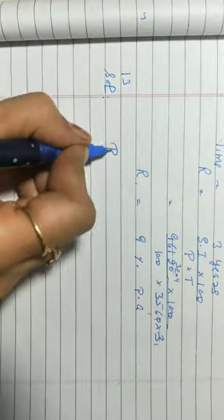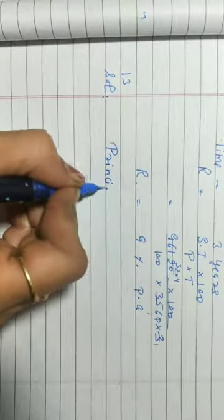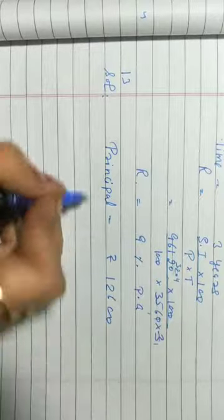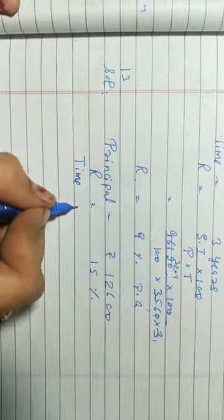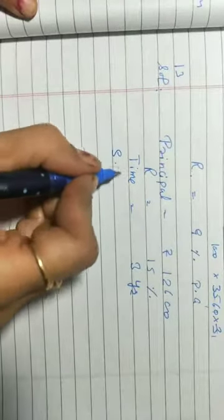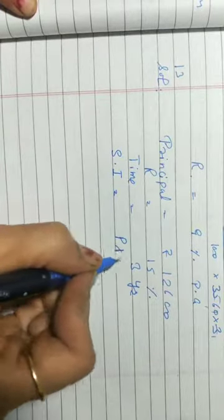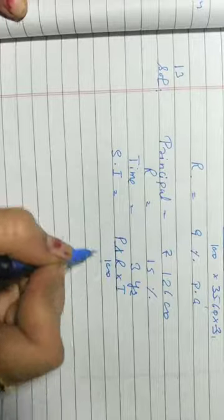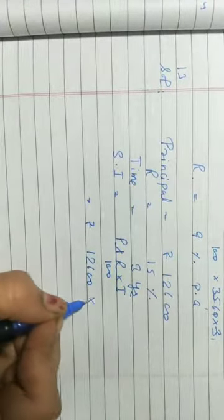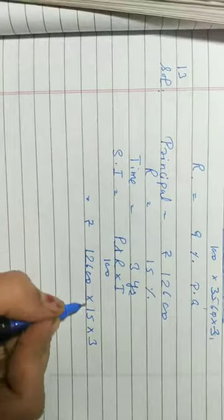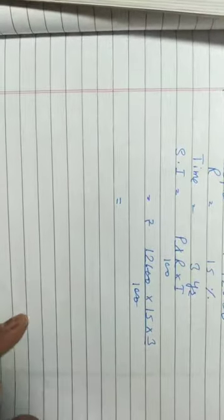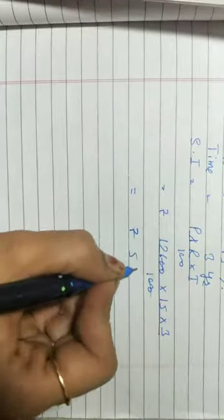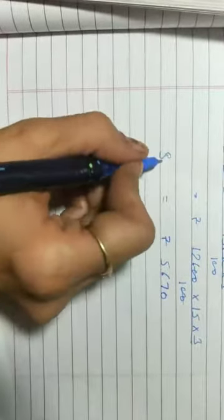Solving question number 13: Principal is rupees 12600, rate of interest is 15%, time is 3 years. Simple Interest = PRT/100 = (12600 × 15 × 3) / 100. After calculation we get the required SI as rupees 5670.